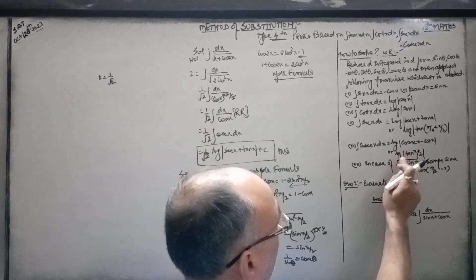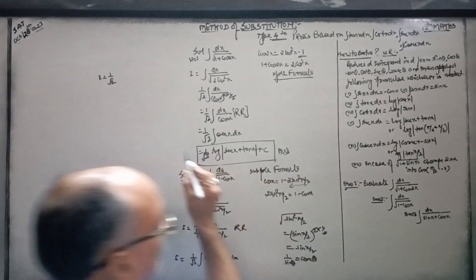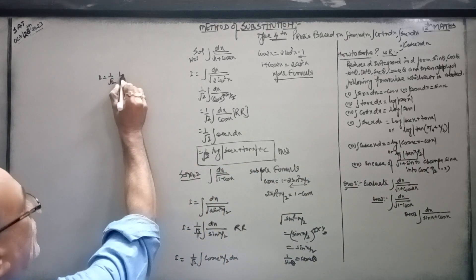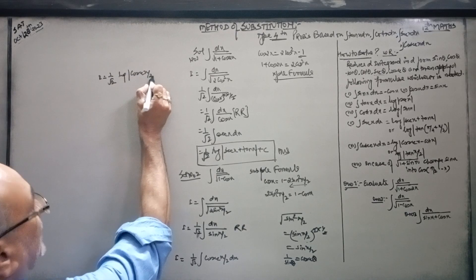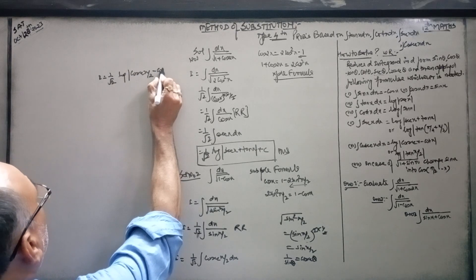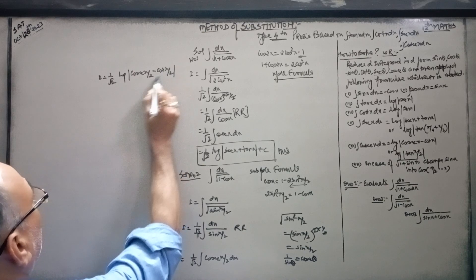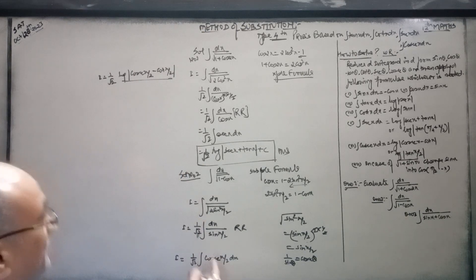Cosec x by 2 is equal to cosec x by 2. Now, the formula: cosec x minus cot x. And then x by 2 is equal to log of cosec x by 2.